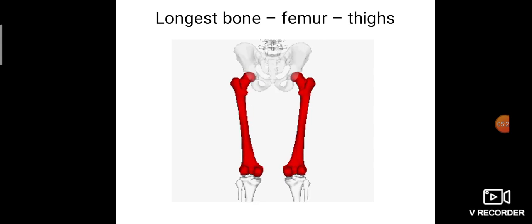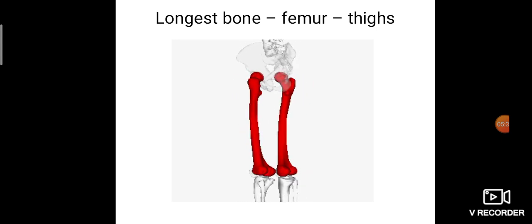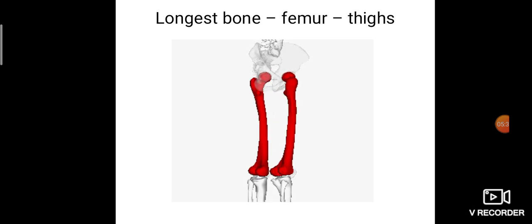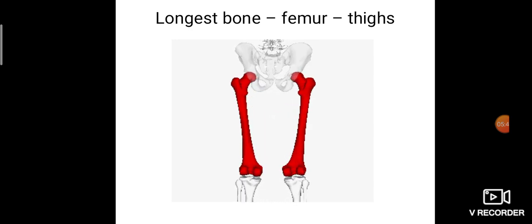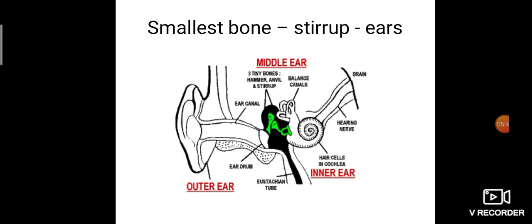Among all these bones, the longest bone is the femur, present in our thighs, connected with the hip region. The smallest bone is called the stirrup, present in our middle ear — we cannot see it with our naked eyes. So: longest bone is the femur in the thigh region, and the smallest bone is the stirrup located inside the ear.